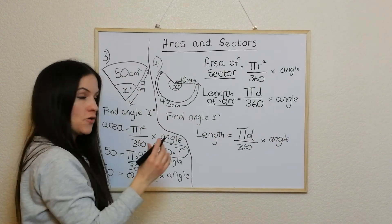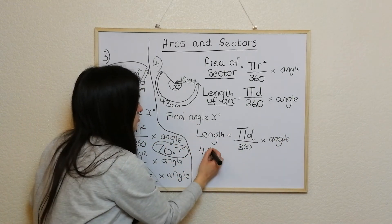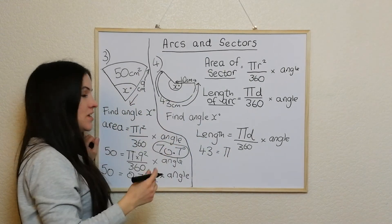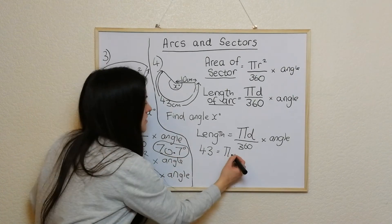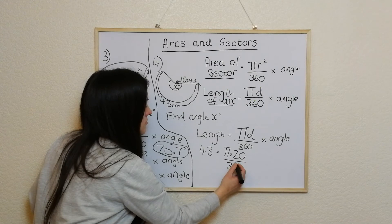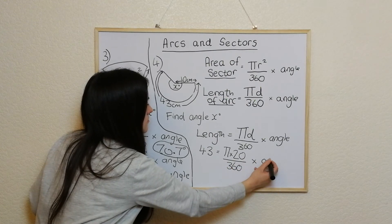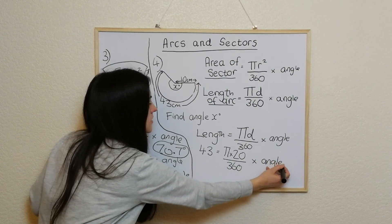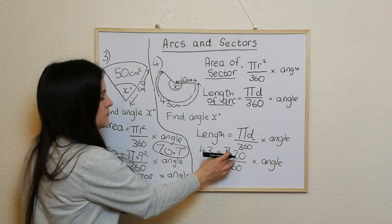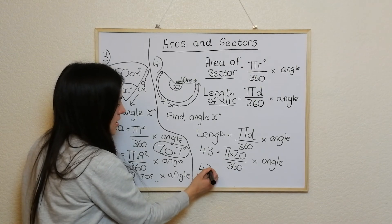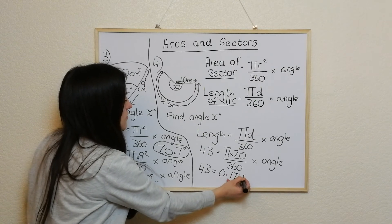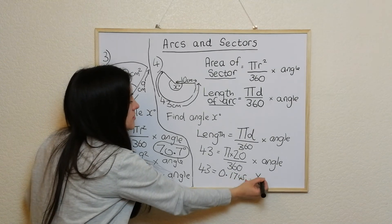The length we've got going round is 43. So 43 equals pi times, now the diameter is, if the radius is 10, the diameter is going to be 20. And what we have here, this bit here works out at 0.1745 dot dot dot times angle.